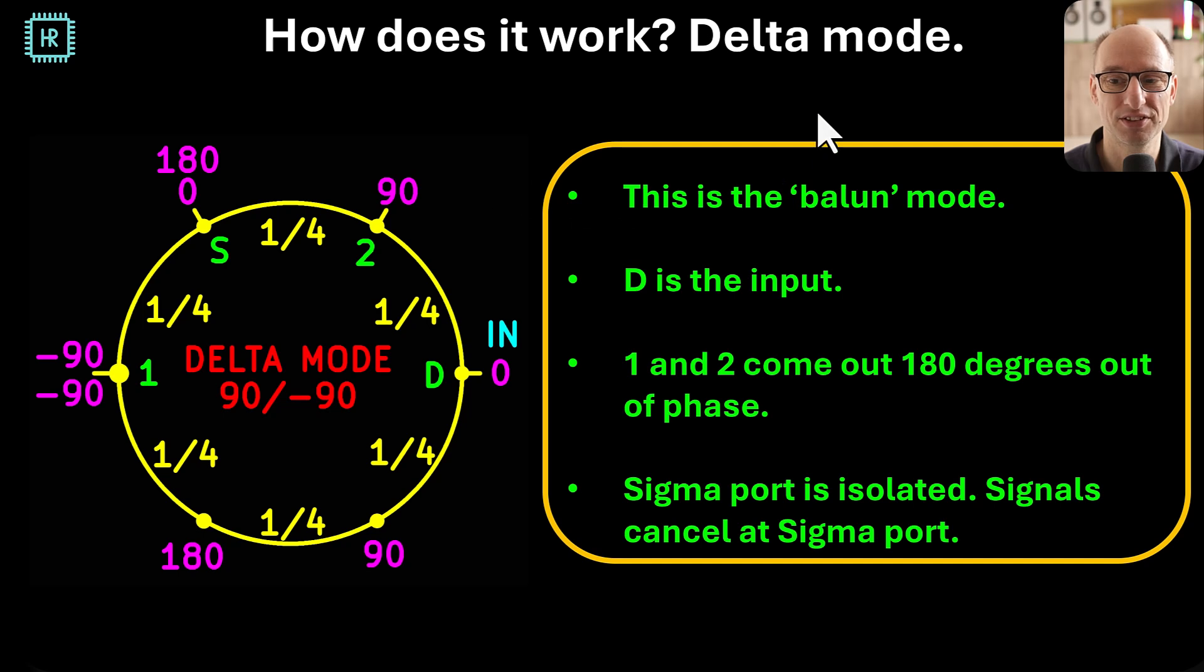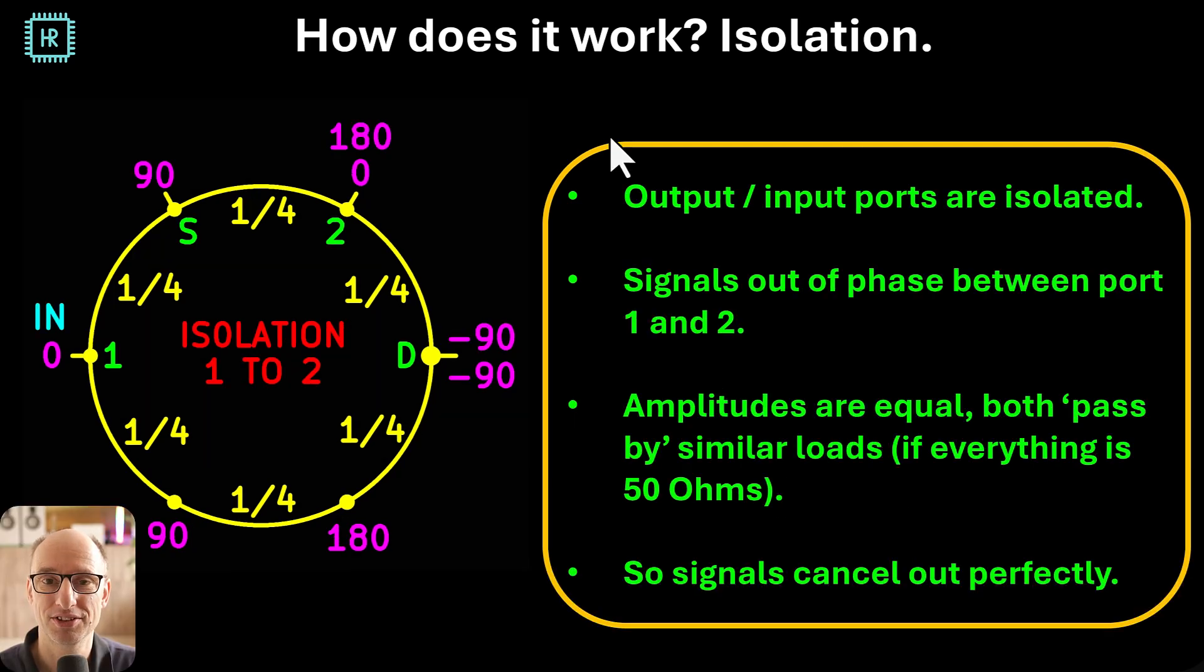Now as I already mentioned, the signal cancels out between certain ports, and that's between port 1 and 2. So if you go in at port 1, you end up at 180 at port 2. And the same happens between 2 and 1, sigma to delta, and delta to sigma—all these paths are isolated. So in theory, at the operation frequency of these quarter wave transformers, you would get infinite isolation, so no signal would come out basically.